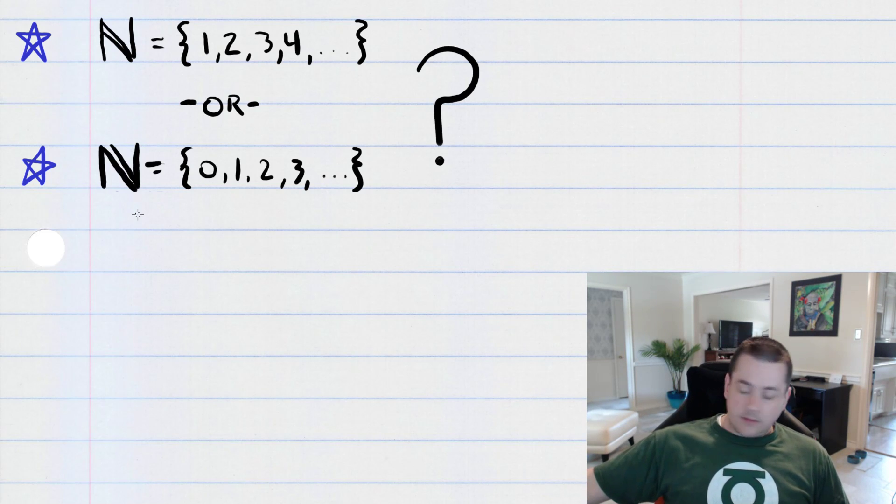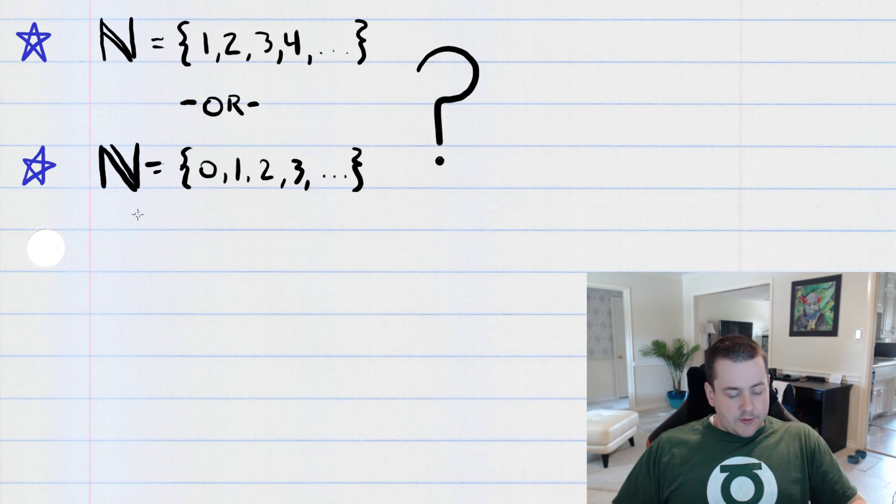So, two math books, both used at universities, use two different definitions for the set of natural numbers, and it's not that one book is correct and the other is wrong.